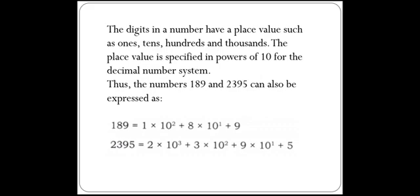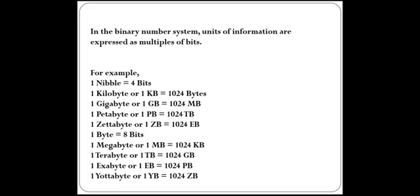For example, 189 can be written as 100 plus 80 plus 9, where 100 is 10 squared, 80 is 8 into 10, and 9 is 9 into 10 to the power 0. Similarly, 2395 can be written as 2000 plus 300 plus 90 plus 5, where 2000 is 2 into 10 to the power 3, 300 is 3 into 10 squared, 90 is 9 into 10 to the power 1, and 5 is 5 into 10 to the power 0. In the binary number system, the base is 2, whereas in the decimal number system, the base is 10. In the binary number system, units of information are expressed in terms of bits.